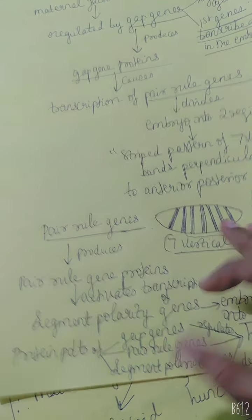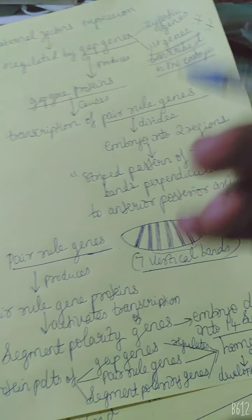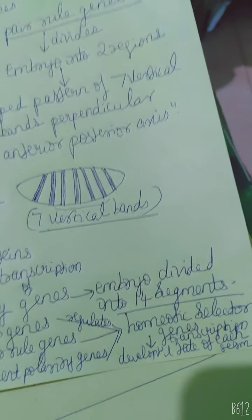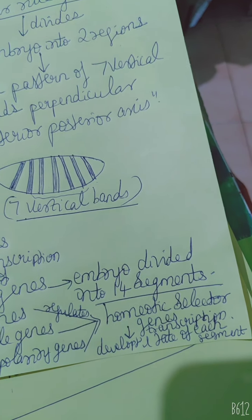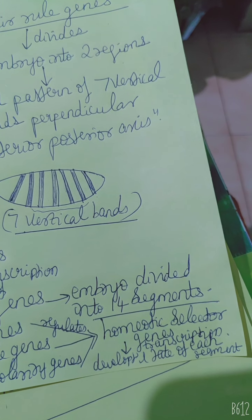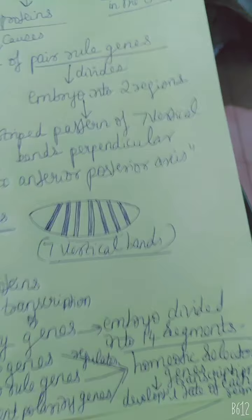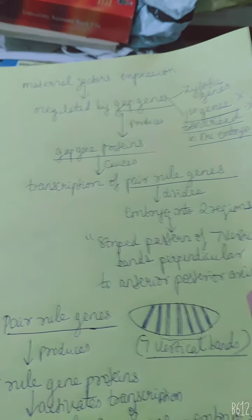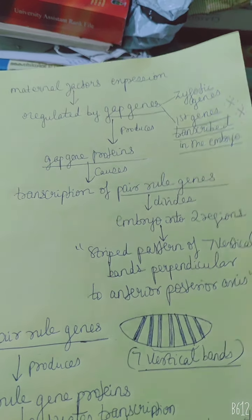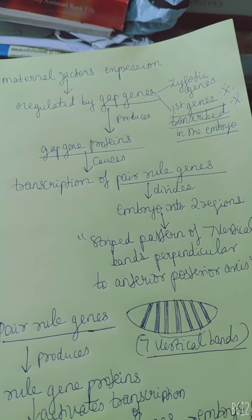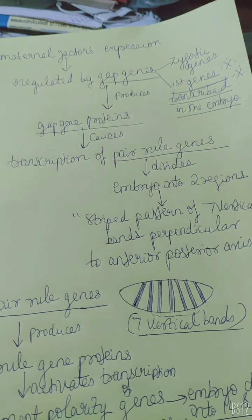Overall, the protein products of all the genes we mentioned — GAP genes, pair-rule genes, and segment polarity genes — all regulate homeotic selector genes. The function of homeotic selector genes is to regulate the developmental fate of each segment inside the embryo through transcription. These are the important areas to concentrate on regarding gene involvement in the determination of the anterior-posterior axis. I hope you understood it.